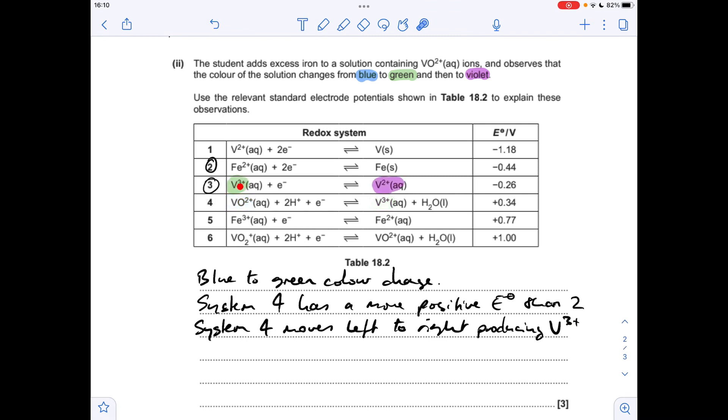So you'll notice that V3+ is also in system 3. So if we compare the standard electrode potentials of 2 and 3, remember that ion's in excess, so you can see that this one here is more positive than the ion one. So this will move left to right and create the violet colored V2+ ion. So a similar phrasing to before. Green to violet color change due to system 3 having a more positive electrode potential than system 2. So system 3 moves left to right, producing the V2+ ion. So obviously that violet one there.